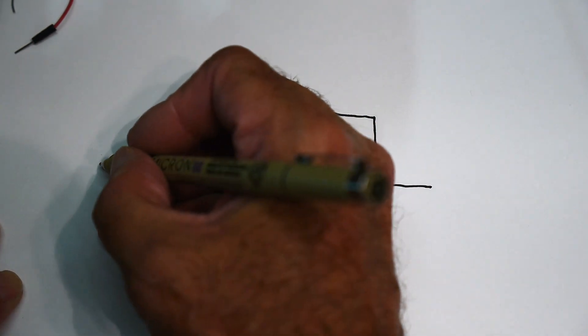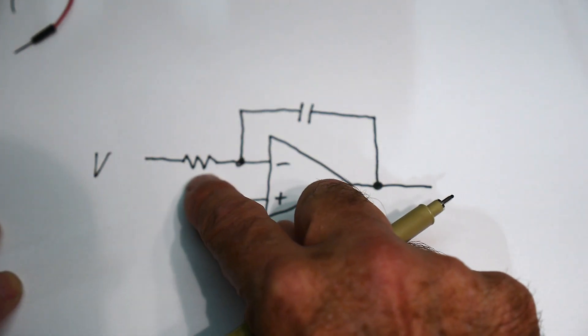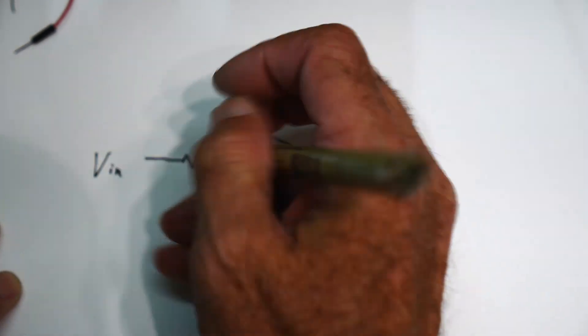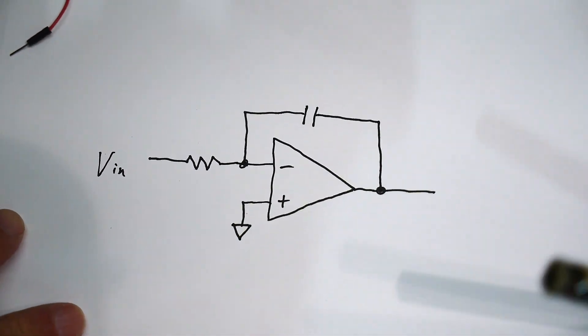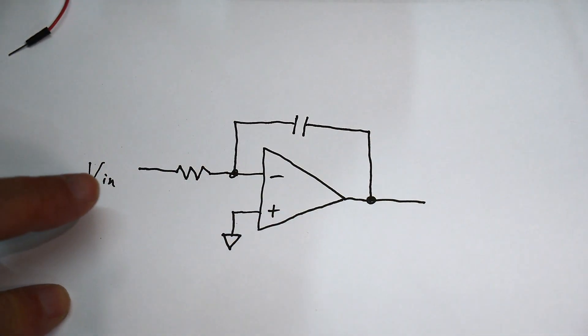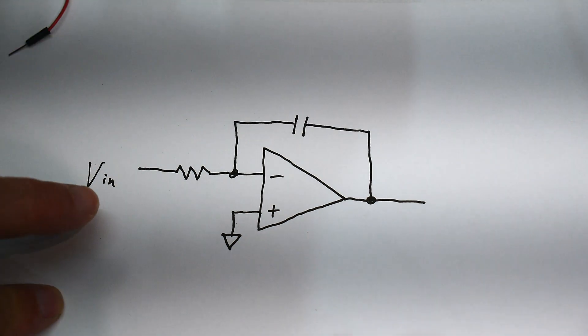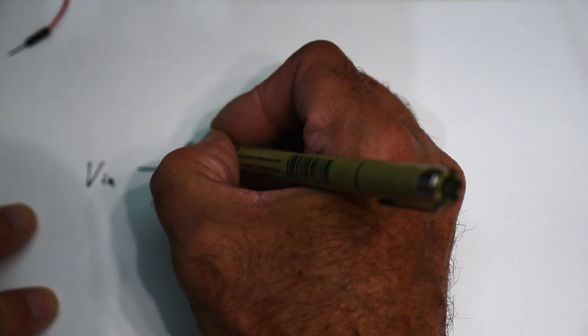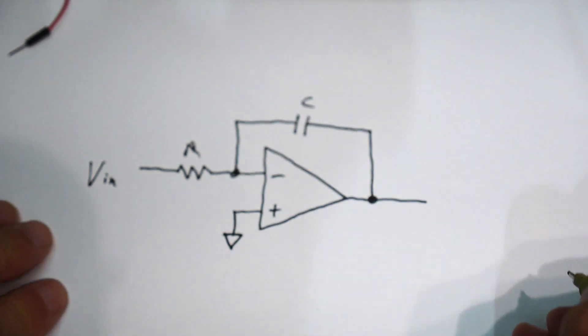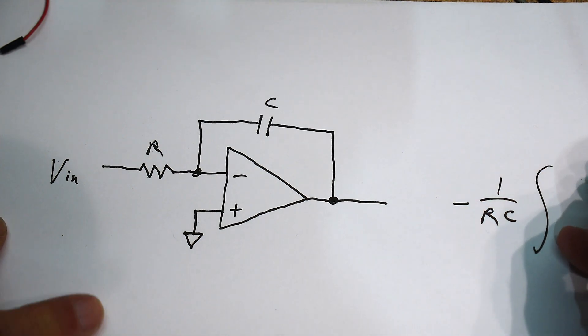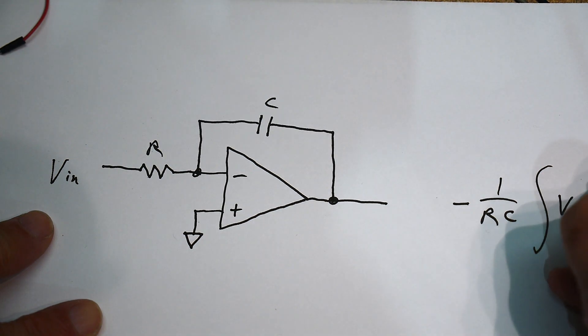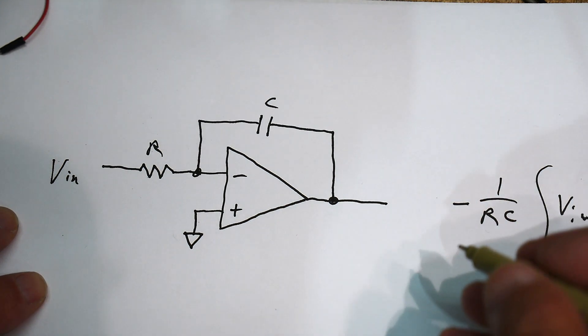And there's a voltage in, and that voltage goes through the circuit. What comes out the other side is the integration of this voltage. And for people who like math, it's minus 1 over RC times the integral of V_in with respect to time. So, this is what you get out.